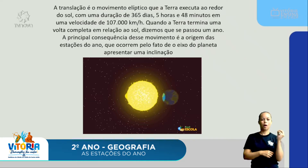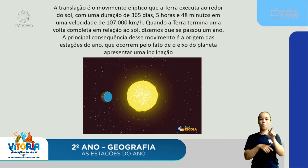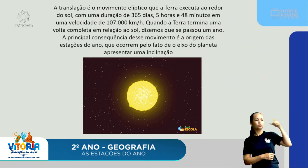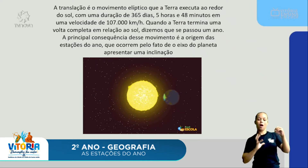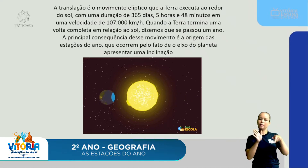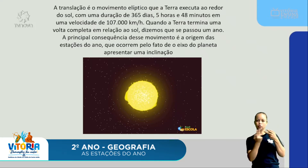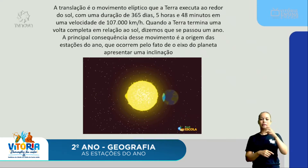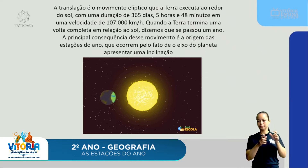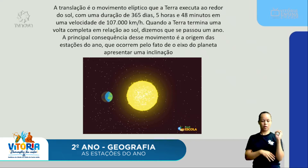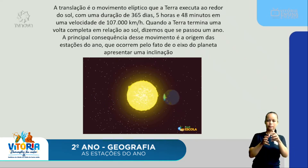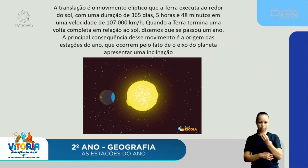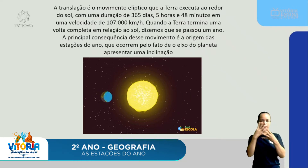A translação é um outro movimento — é o movimento que a Terra executa ao redor do Sol. O Sol fica lá no centro, parado, e a Terra vai girando em volta dele, ao mesmo tempo girando em volta de si mesma. A Terra leva 365 dias para dar uma volta completa em torno do Sol, ou seja, um ano. A principal consequência desse movimento de translação é a origem das estações do ano, que ocorrem pelo fato do eixo do planeta apresentar uma inclinação.